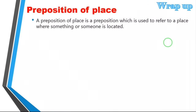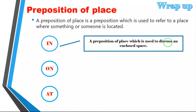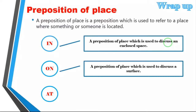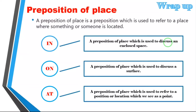Let's wrap it up. In this lesson we learned about prepositions of place — used to refer to a place where something or someone is located. We learned three: in, on, and at. We use 'in' to discuss an enclosed space, 'on' to discuss a surface, and 'at' to refer to a position or location seen as a point. Can you read those words? In, on, at.